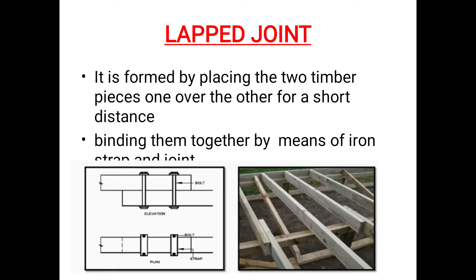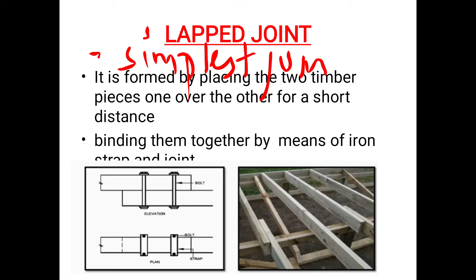First: lapped joint. It is formed by placing two timber pieces one over the other for a short distance. The two ends overlap. One piece is placed over the other at a short distance — this is called a lapped joint.